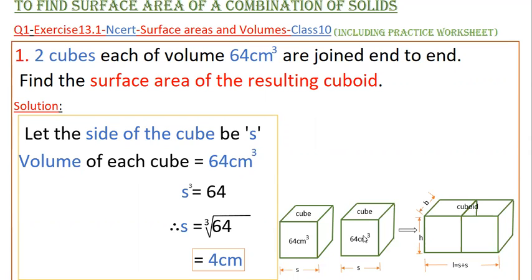So here there are two cubes. If you join these two cubes end to end, then a cuboid is formed. So we have to find the total surface area of this cuboid.